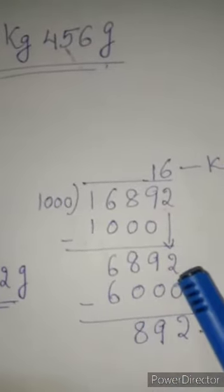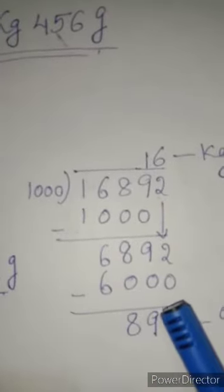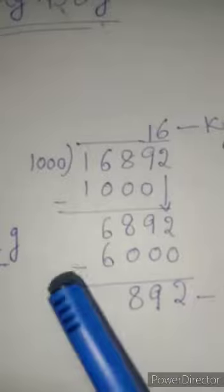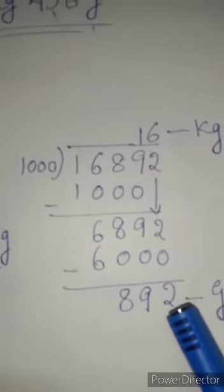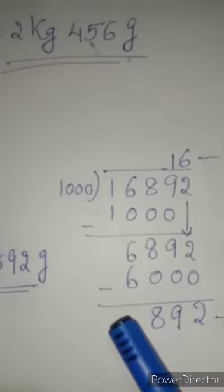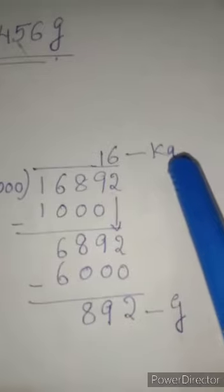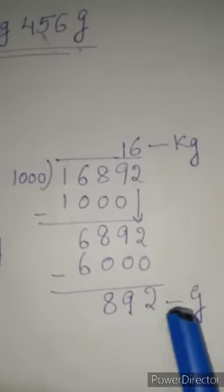16 into 1000, 6000 that you write below here. And now, minus sign you put. Subtract. 2 minus 0, 2. 9 minus 0, 9. 8 minus 0, 8. 6 minus 6, 0. So this 16, at the right side you write kg, 16 kg. Then 892 gram.